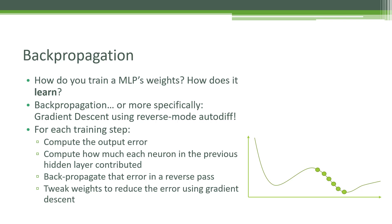So that's all backpropagation is. We run a set of weights, we measure the error, we backpropagate that error using those weights, tune things using gradient descent, try it again, and we just keep doing this over and over again until our system converges.